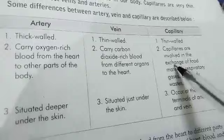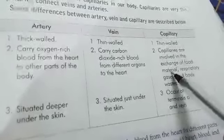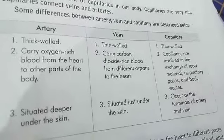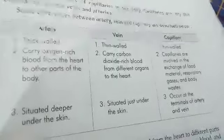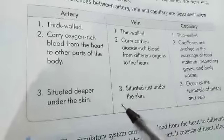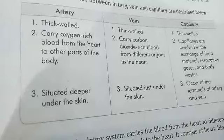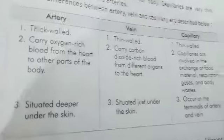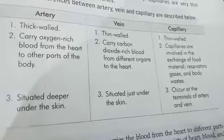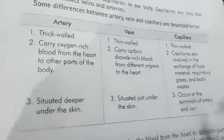Capillaries are involved in the exchange of food materials, respiratory gases like carbon dioxide and oxygen, and body waste materials. Arteries are situated deeper under the skin and are not visible from outside. Veins can be seen just under the skin at some parts of the body. Capillaries occur at the terminal ends of arteries and veins.